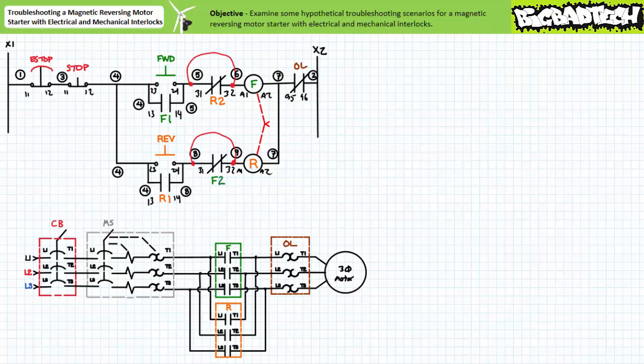While a magnetic reversing motor starter with only a mechanical interlock does prevent simultaneous closure of both contactors, it does so at the risk of potentially damaging the contactor coils. For this reason, magnetic reversing motor starters with both electrical and mechanical interlocks are preferred.